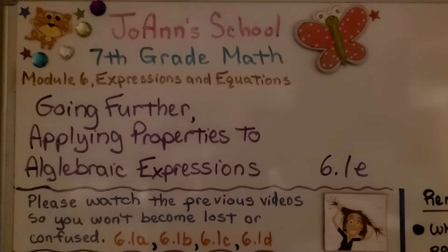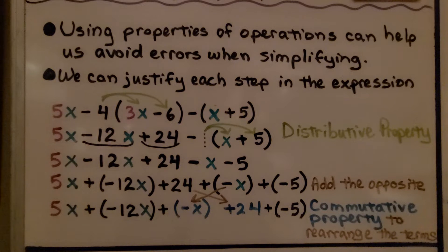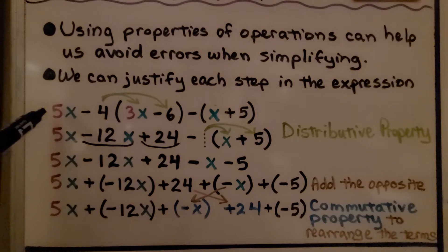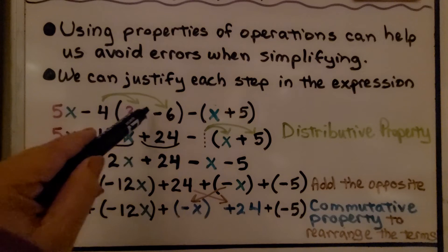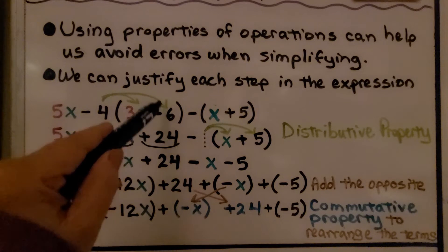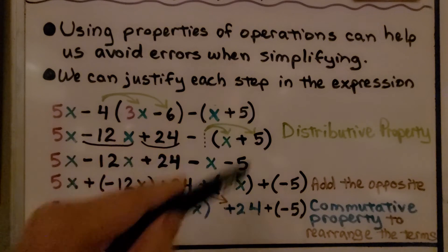This is the going further section at the end of 6.1, 6.1e. We're going to be applying properties to algebraic expressions. Using properties of operations can help us avoid errors when simplifying. We can justify each step in this expression: 5x minus 4 times 3x minus 6, minus x plus 5.